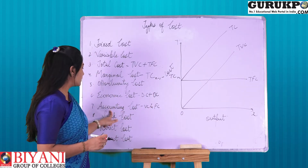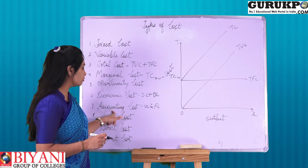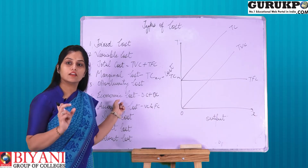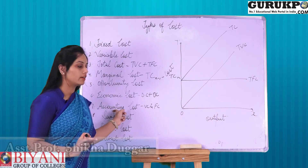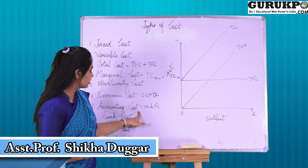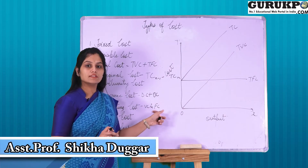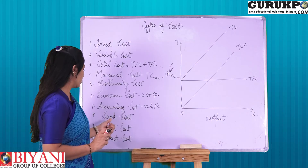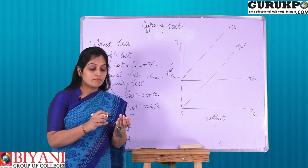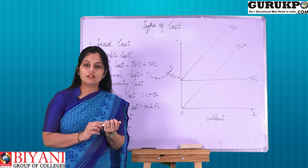Next is accounting cost. These are those costs which are used for maintaining the accounts in an organization. Accounting cost is equal to variable cost plus fixed cost.